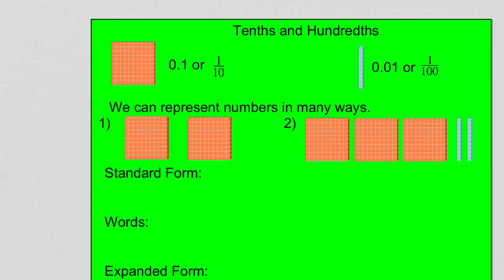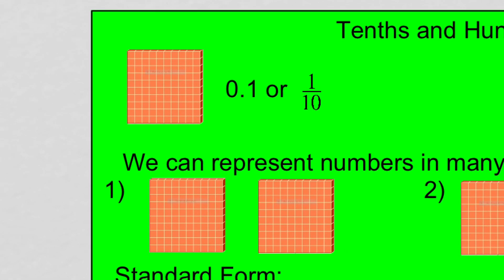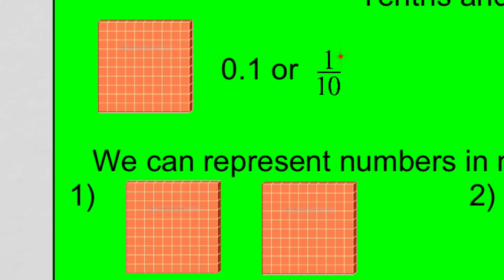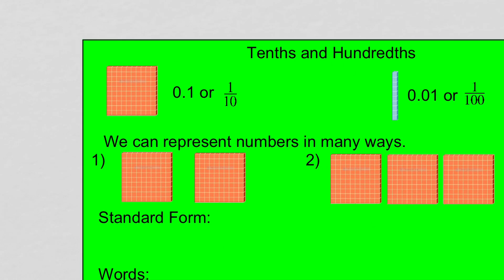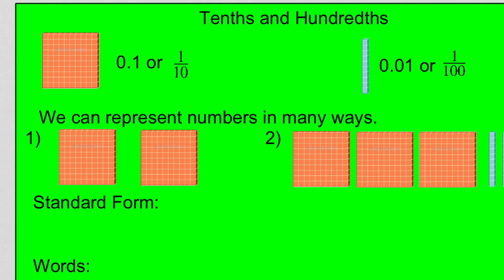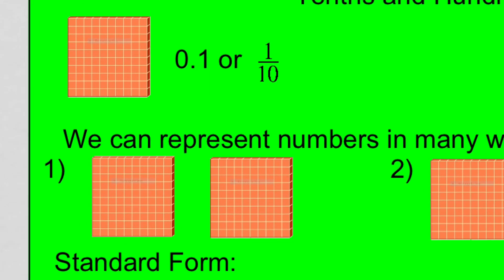The first place value we've been looking at is the tenths place value, which we represent with this orange base 10 block. We say that's the decimal zero and one tenth, or the fraction one tenth. The second place value we've been looking at is the hundredths place value, represented by this blue base 10 block. It is the second decimal place — we say that's one hundredth, or the fraction one over a hundred. Those have been the two place values we've been looking at.